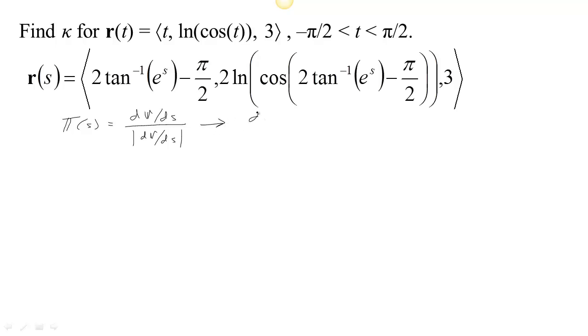So after we had that, then we could calculate dT/ds. Once we have the unit tangent in terms of s, we calculate dT/ds and take its norm, and that would give us our curvature, kappa.